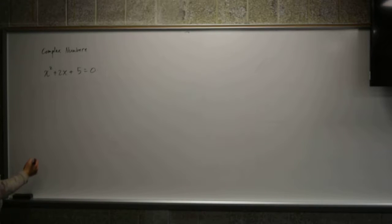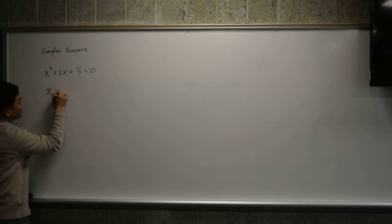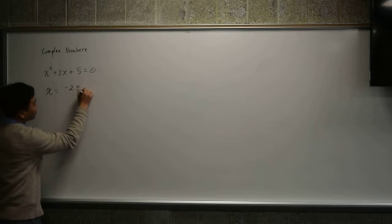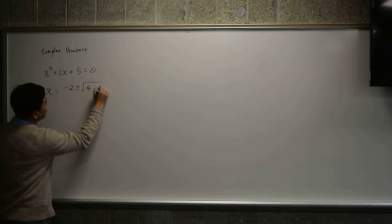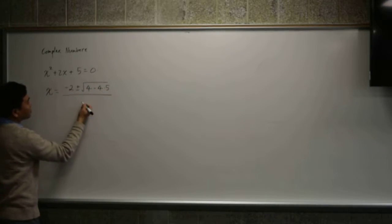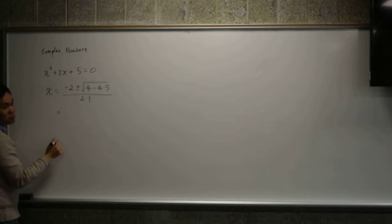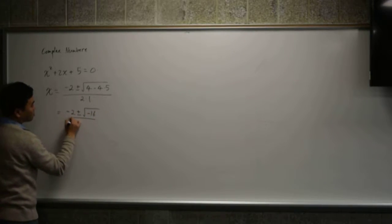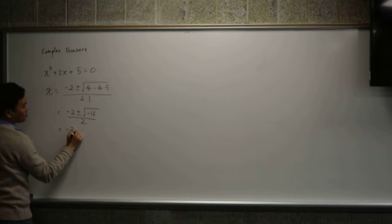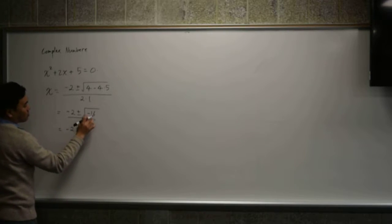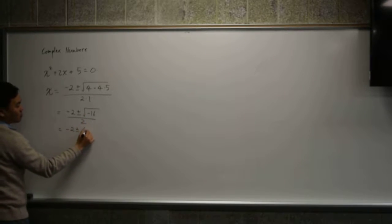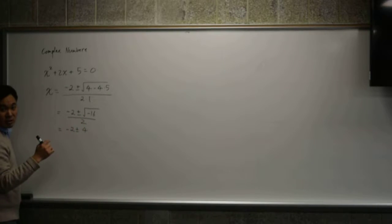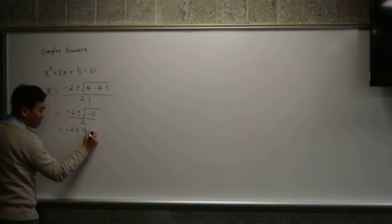and you use the quadratic formula on this, x equals negative 2 plus minus square root of 4 minus 4 times 5 over 2 times 1. That's the quadratic formula, right? And then you have negative 2 plus minus negative 16 over 2, which is negative 2 plus minus... Well, the square root of 16 is 4, but what is the square root of negative 1? That's what people call as i, right?